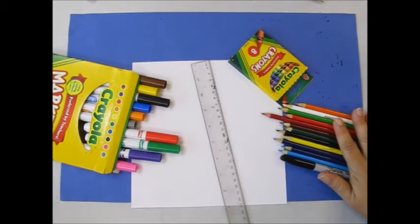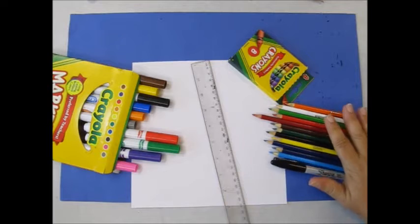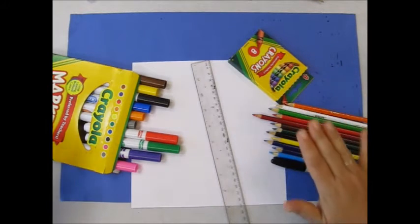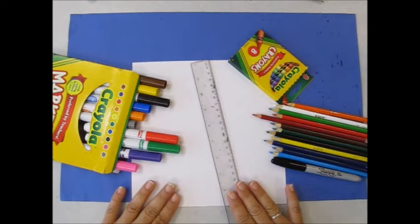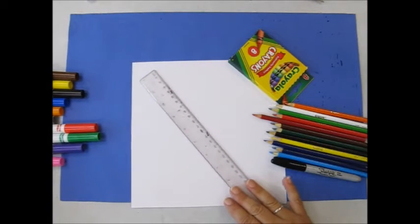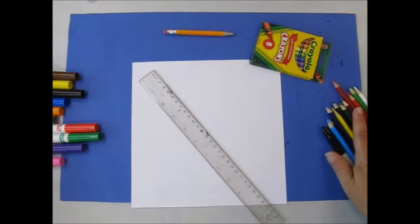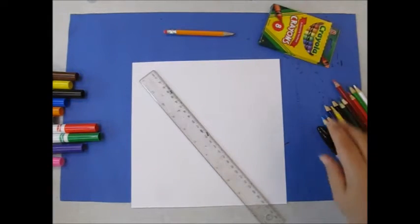So what we're going to do is we're going to use colored pencils or crayons or markers. You'll need the square piece of paper that I put in Packet Pickup. You'll need a ruler and a pencil if you want to start with a pencil. And we're going to make an optical illusion.